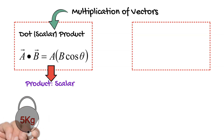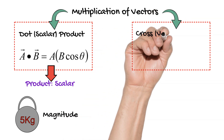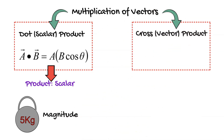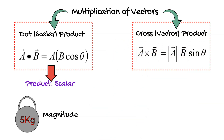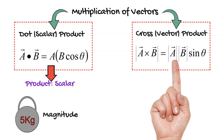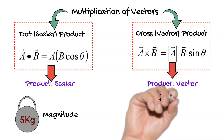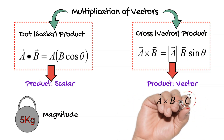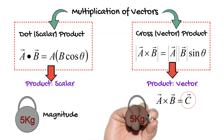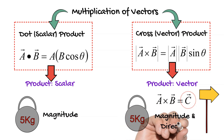This scalar quantity only has magnitude. The second type is called the cross product or vector product. The formula is a cross b equal to a b sin theta. It is called a vector product because the product we get is a vector quantity. A cross b gives us another vector c, which has both magnitude and direction.